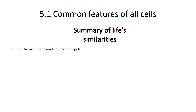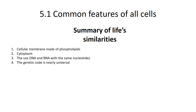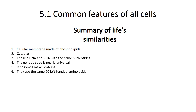Let's review the similarities of all cells. They all have a cellular membrane made of phospholipids. They all have a cytoplasm. They use DNA and RNA with the same nucleotides, and the genetic code is nearly universal — we inherited it from our last common ancestor. We all use ribosomes to make proteins, and to make those proteins, all life uses basically the same 20 left-handed amino acids.